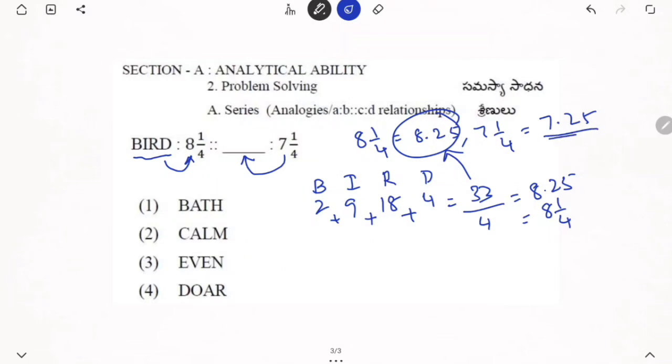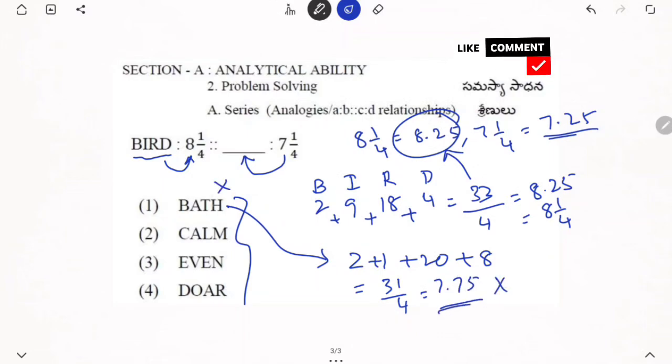Now, using the same logic, 7, 1 by 4 or 7.25 average we will get for what? If I take BATH, whether BATH is the correct option we will see. B means 2, A is 1, T is 20 and H is 8. When you add all these things, 31 divided by 4 is around 7.75. So BATH is not correct.